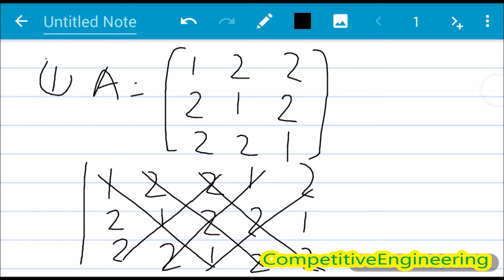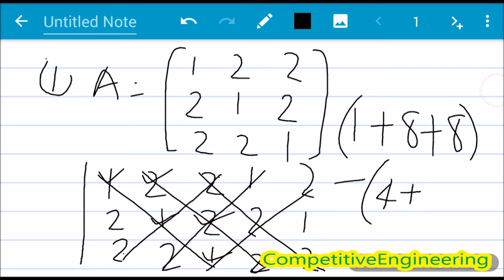So we multiply the diagonal: 1×1×1 = 1, plus 2×2×2, that is 2 cubed, that is 8, plus 2×2×2 = 8. Plus 1×2×2 = 4, plus 2×2×2 = 8, plus 2×2×2 = 8.